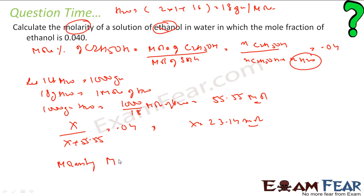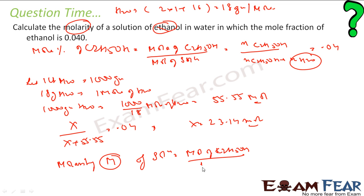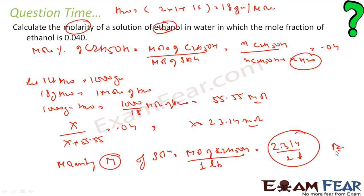Finding molarity is now very simple. Molarity M of solution equals moles of ethanol divided by volume in liters, that is 2.314 / 1 liter = 2.314 M. Easy — not a difficult question at all.